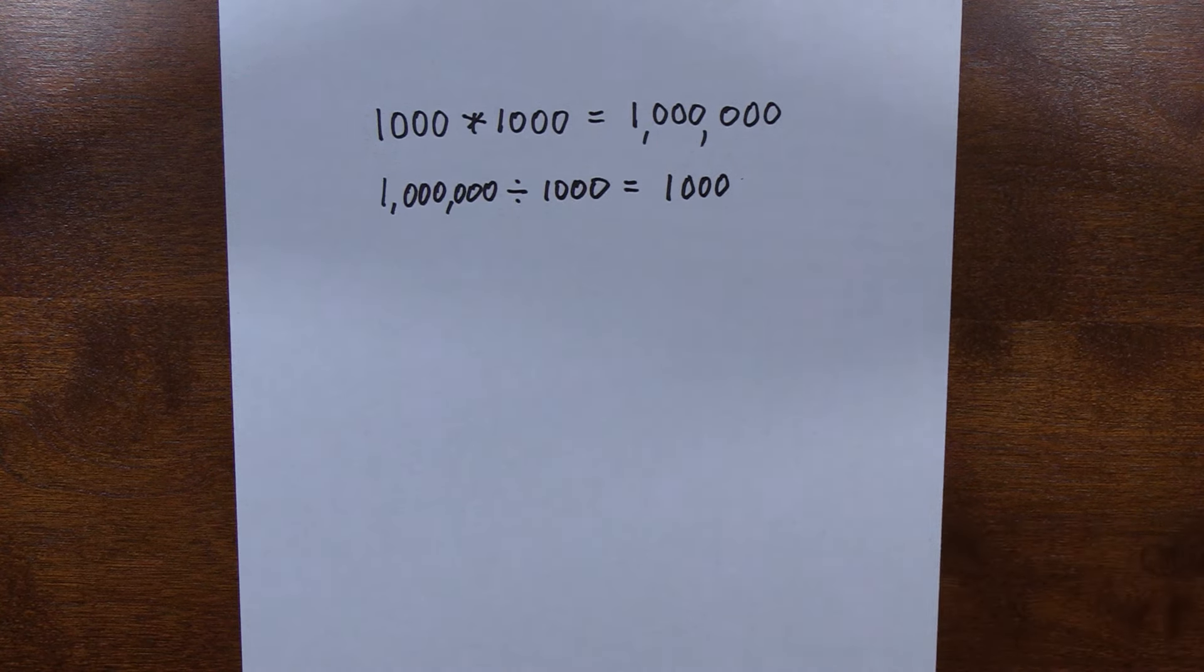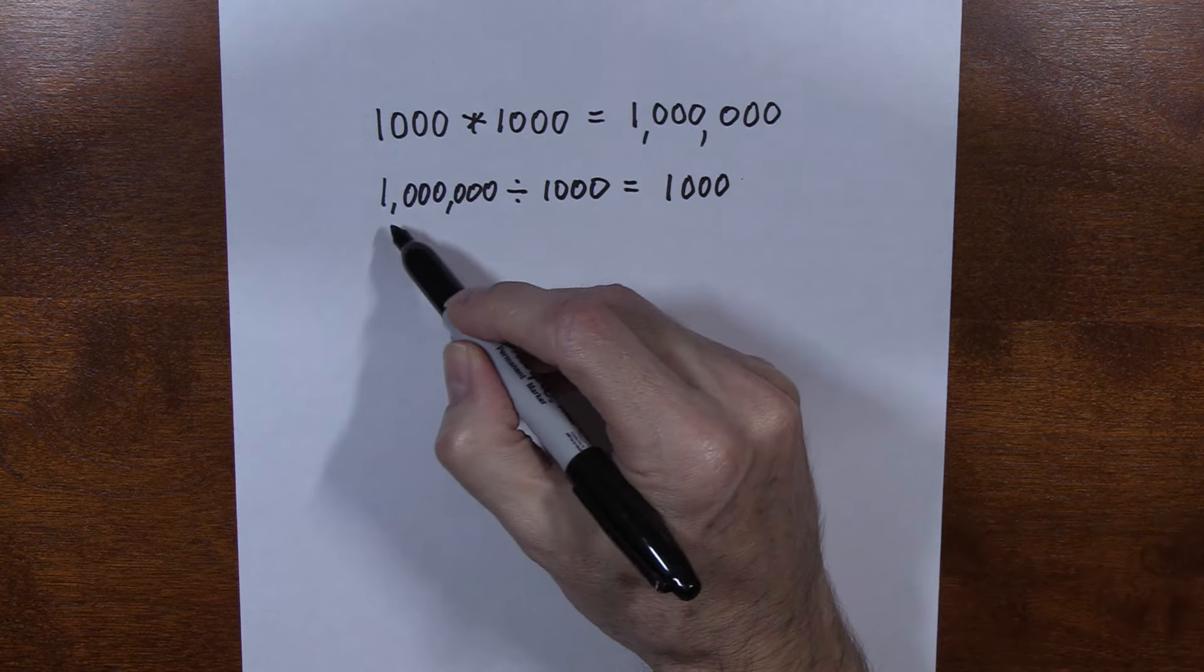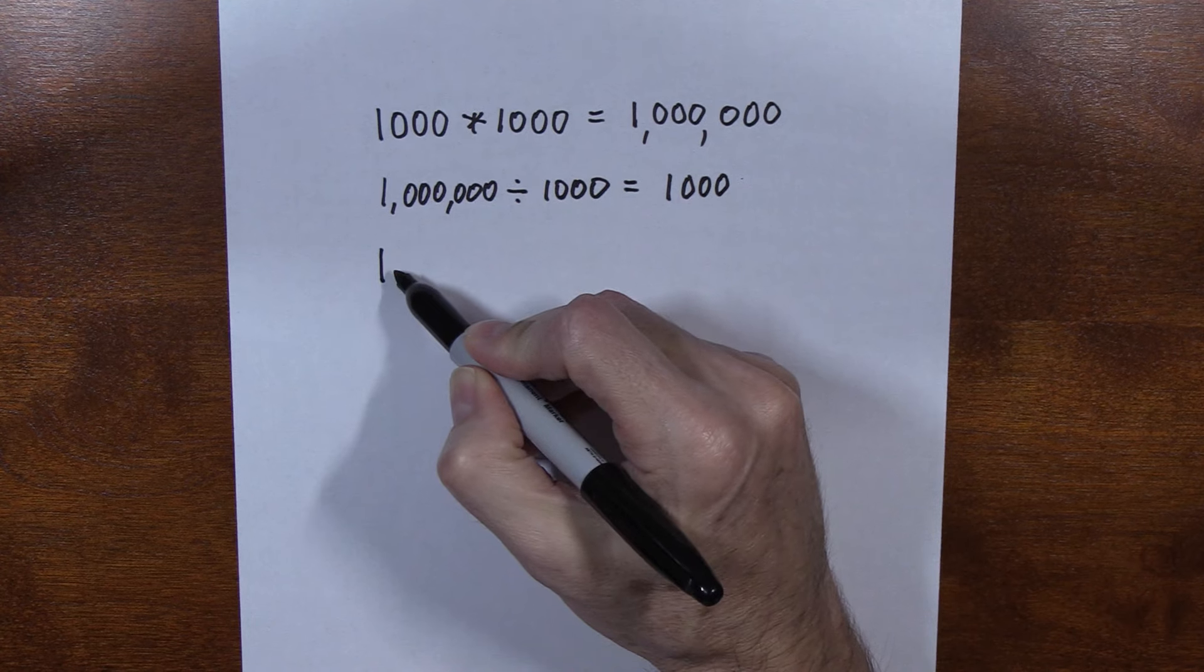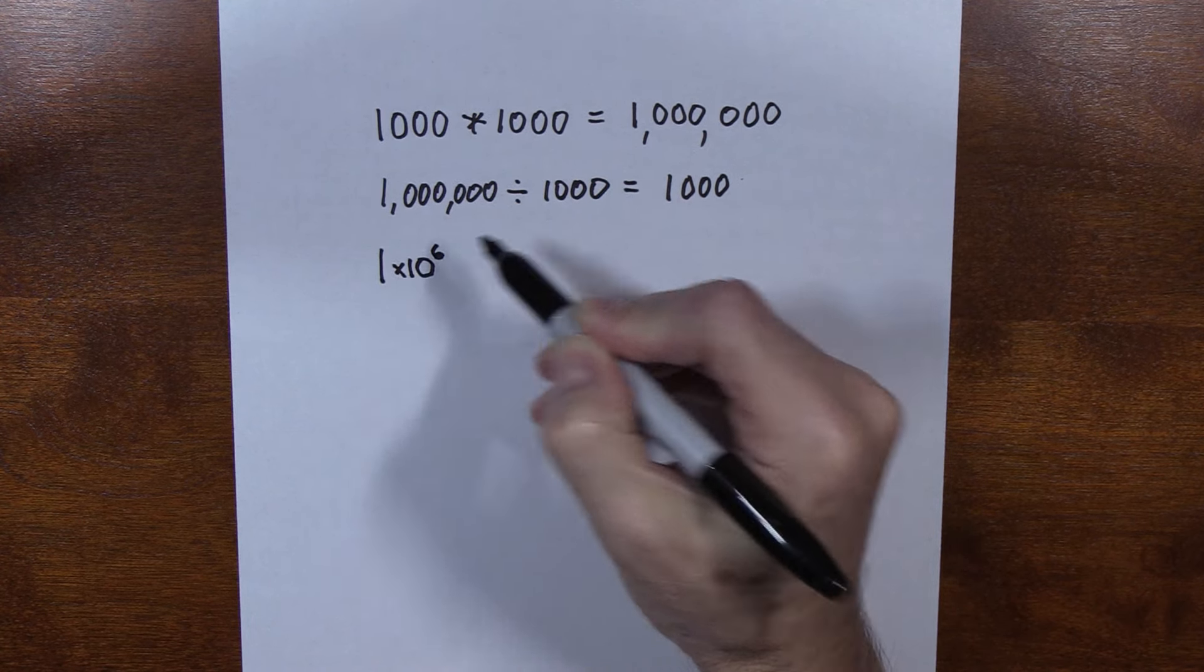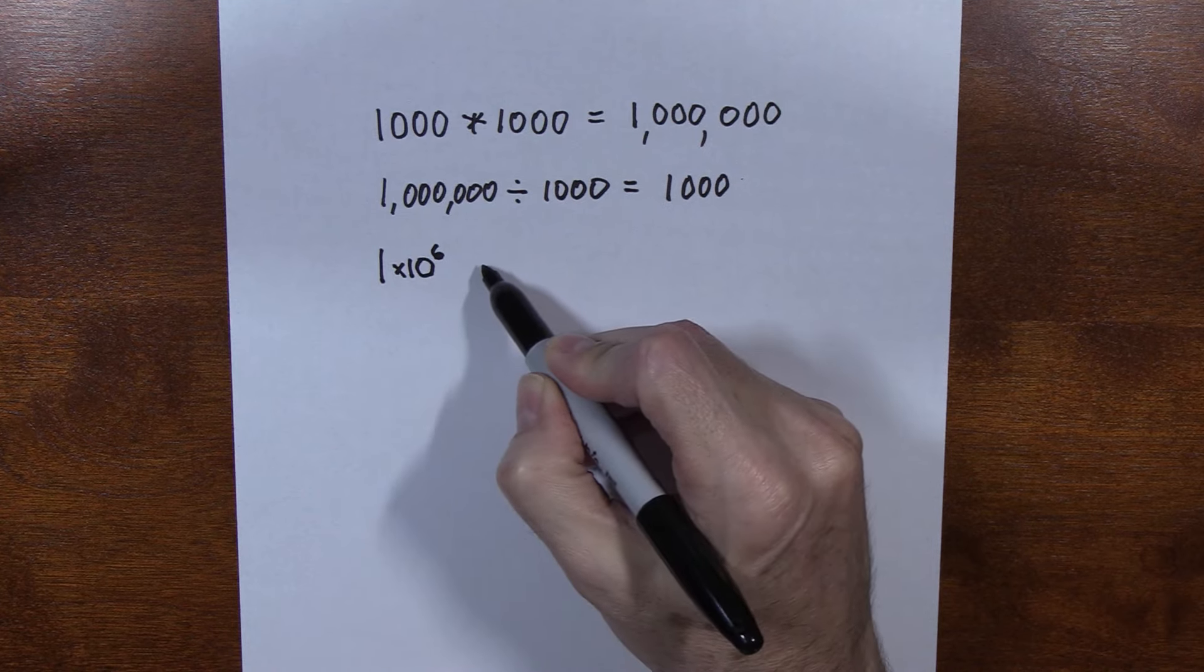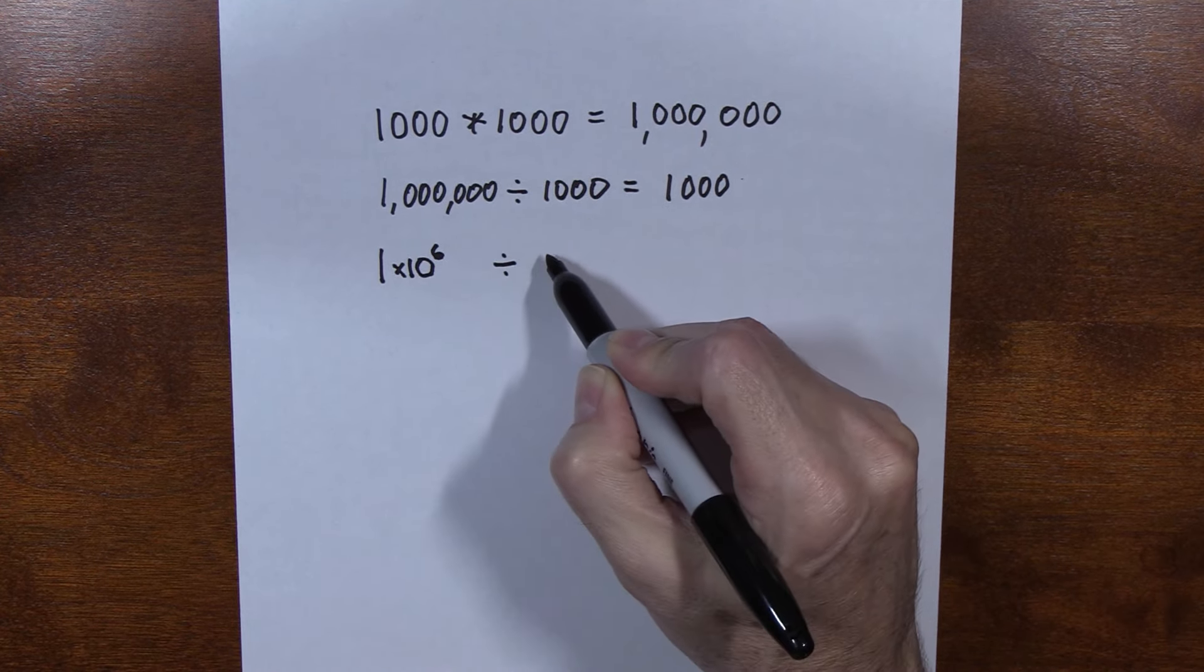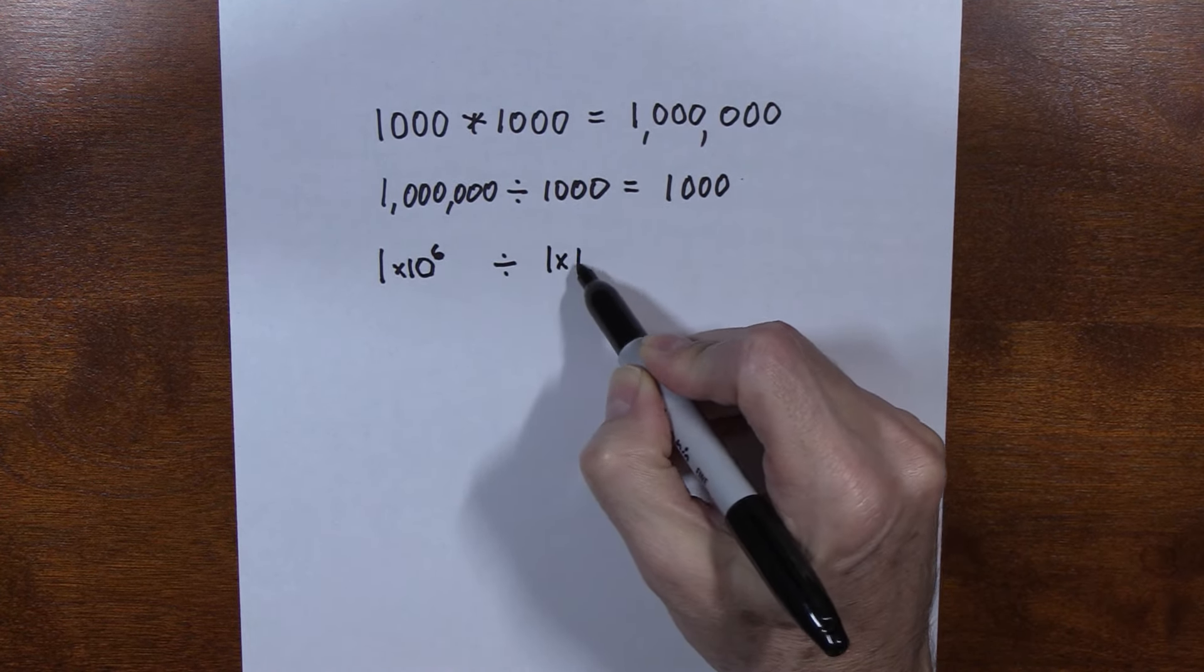Now, let's do this with scientific notation. When you have six zeros, you can express that as one times ten to the sixth power. Likewise, a thousand can be represented as one times ten to the third.